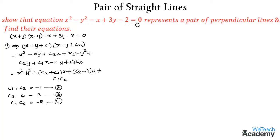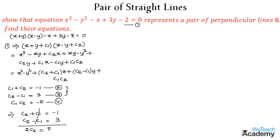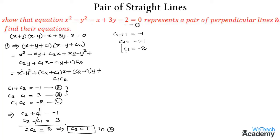To find c2, we add equation 2 (c1 + c2 = -1) and equation 3 (c2 - c1 = 3). The c1 terms cancel, giving 2c2 = -1 + 3 = 2, so c2 = 1. Substituting back into equation 2: c1 + 1 = -1, so c1 = -2. These are our values of c1 and c2.